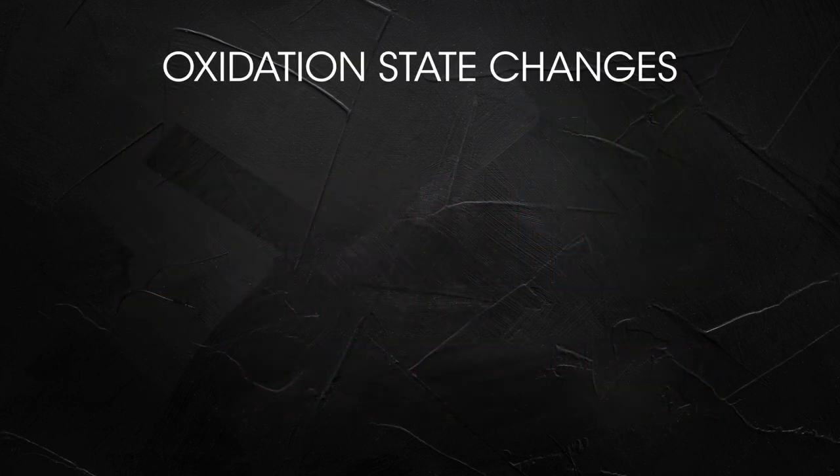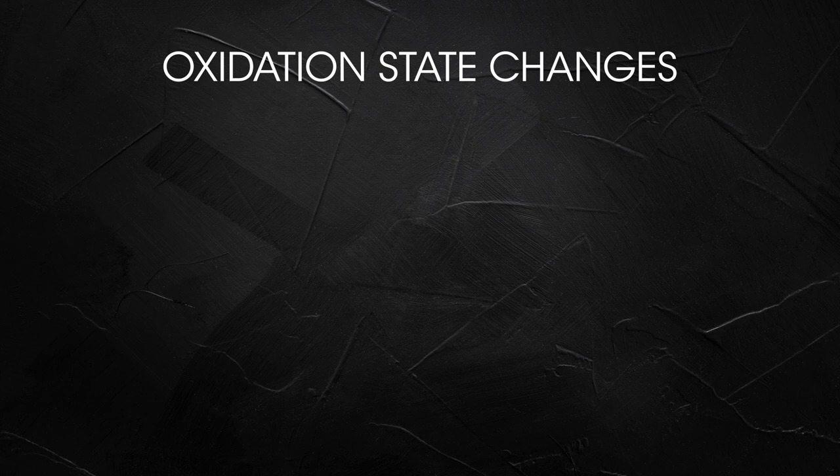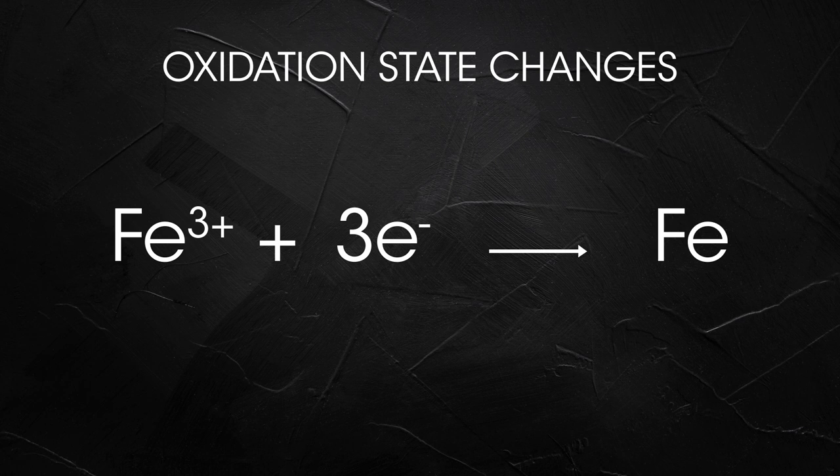We look at how the oxidation states of iron and carbon change in the reaction. Iron begins in the positive three state and ends up in the zero state. Remember all elements have a zero oxidation state. To achieve this the iron three positive ion must gain three electrons. Reduction is gain of electrons.